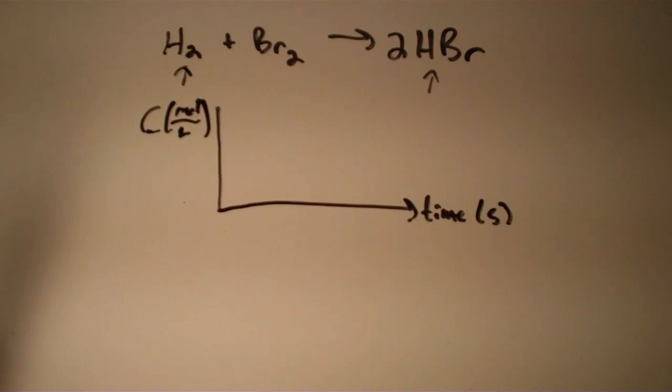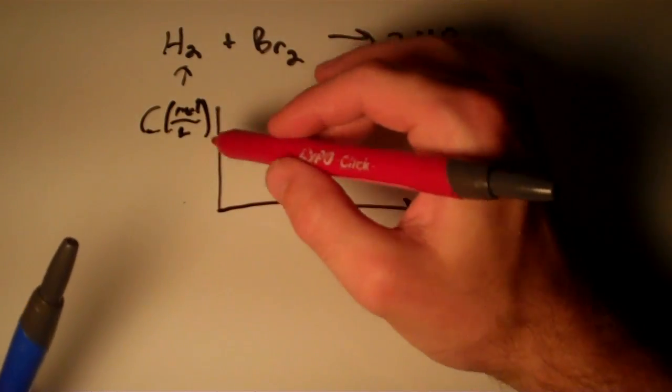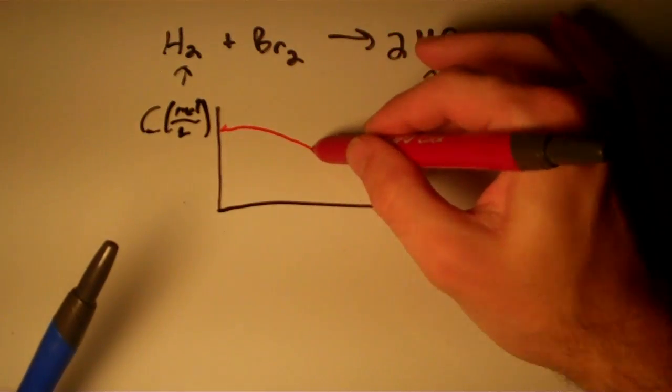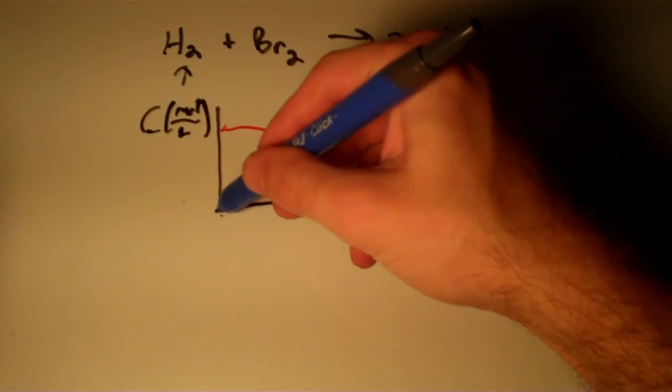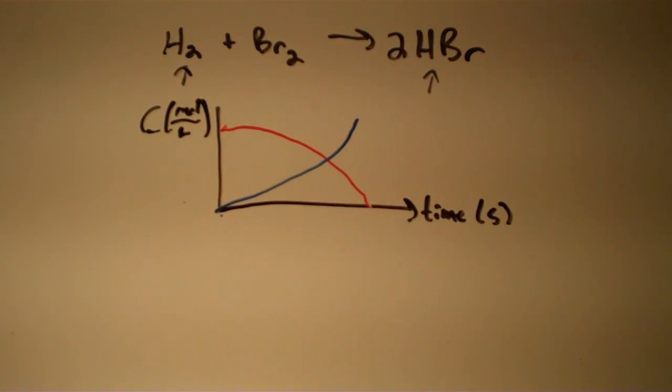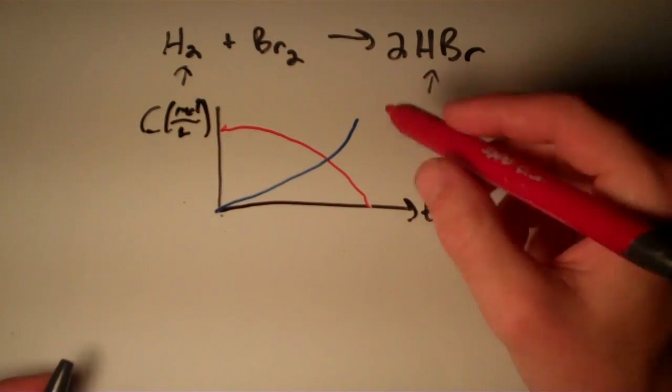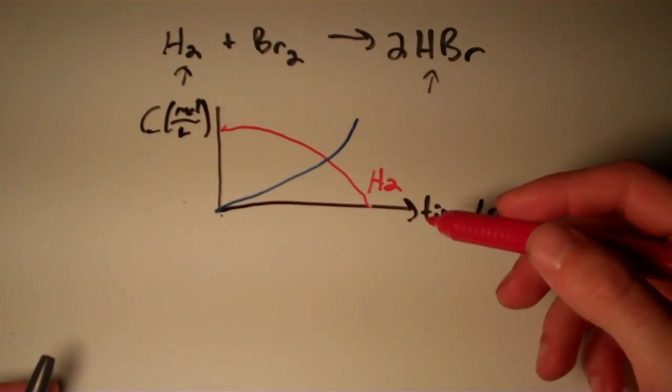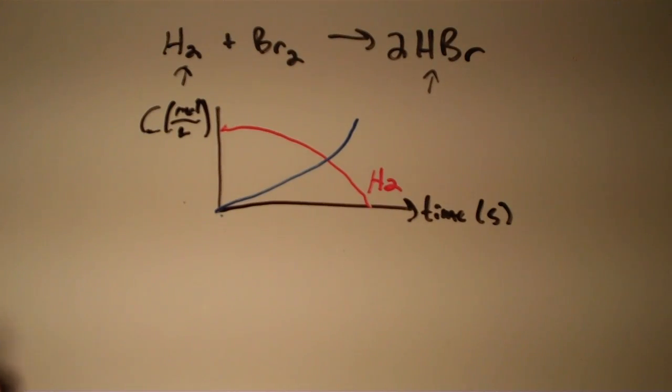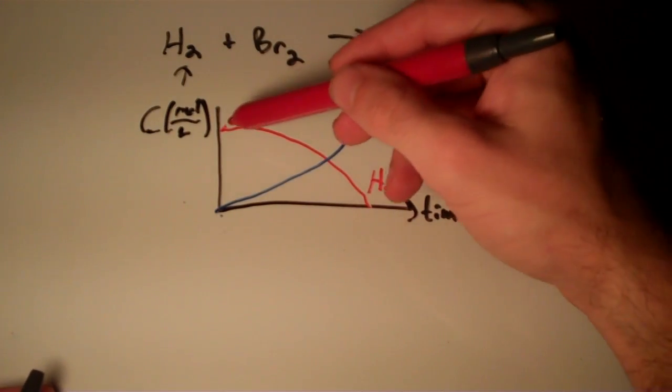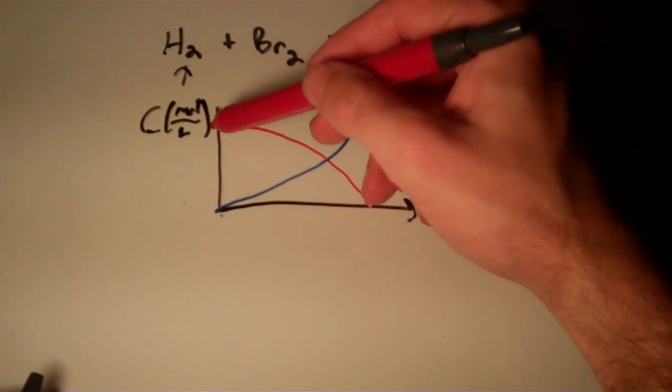The curves for the reactants and products respectively look like this. Now can you guess which curve corresponds to which? Does the red curve correspond to H₂ or HBr? The correct answer is H₂. Why? Because like we said earlier, the concentrations of the reactants are decreasing—the reactants are being used up as the reaction proceeds. Notice that this curve represents that over time you have a decrease in concentration.